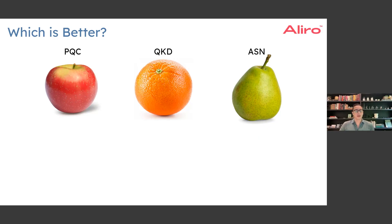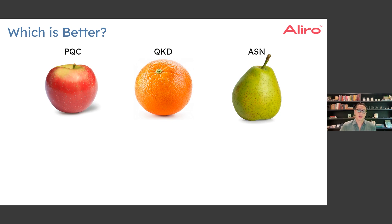We get this question a lot when it comes to the solution space for Q-Day: what is a better solution? In some ways it's a fair question, and in other ways it's not a fair comparison. I'd like to use the analogy of what's a better fruit — is it apples, oranges, or pears? It's objective to some degree, but also very subjective. PQC is good at certain things that QKD is not good at, and vice versa. So it's a healthy question to ask — let's dive deeper into it.